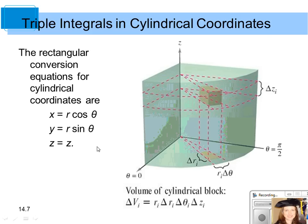To find the volume using cylindrical coordinates, imagine dividing up the solid into little sectors of circular rings. This is a volume of a cylindrical box — it's the area of the base, which is r times dr times d theta, times the height, which is dz.